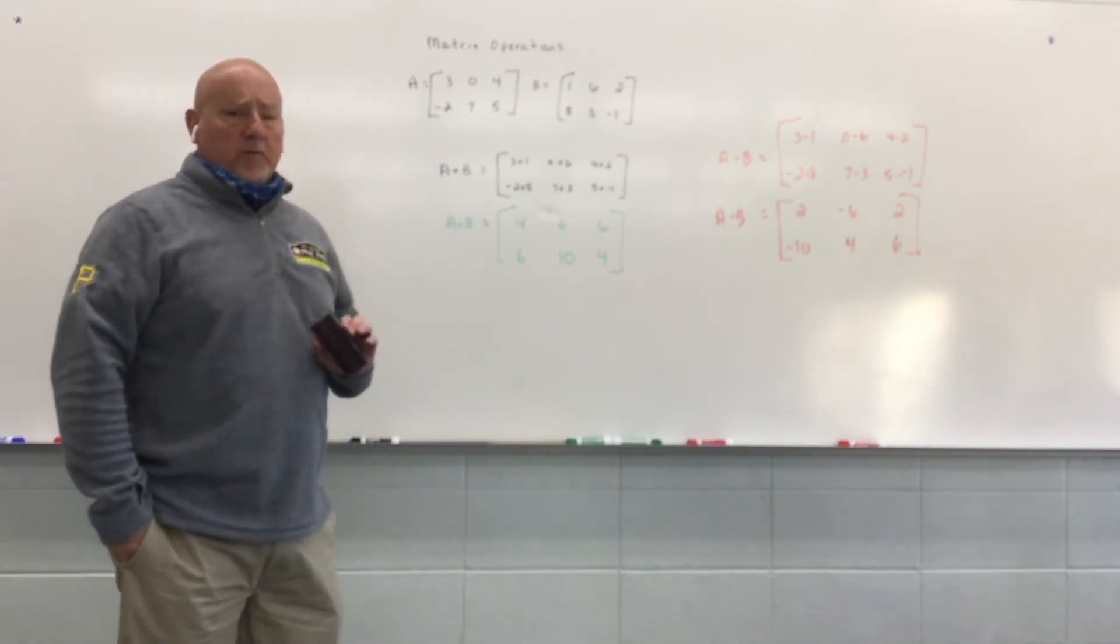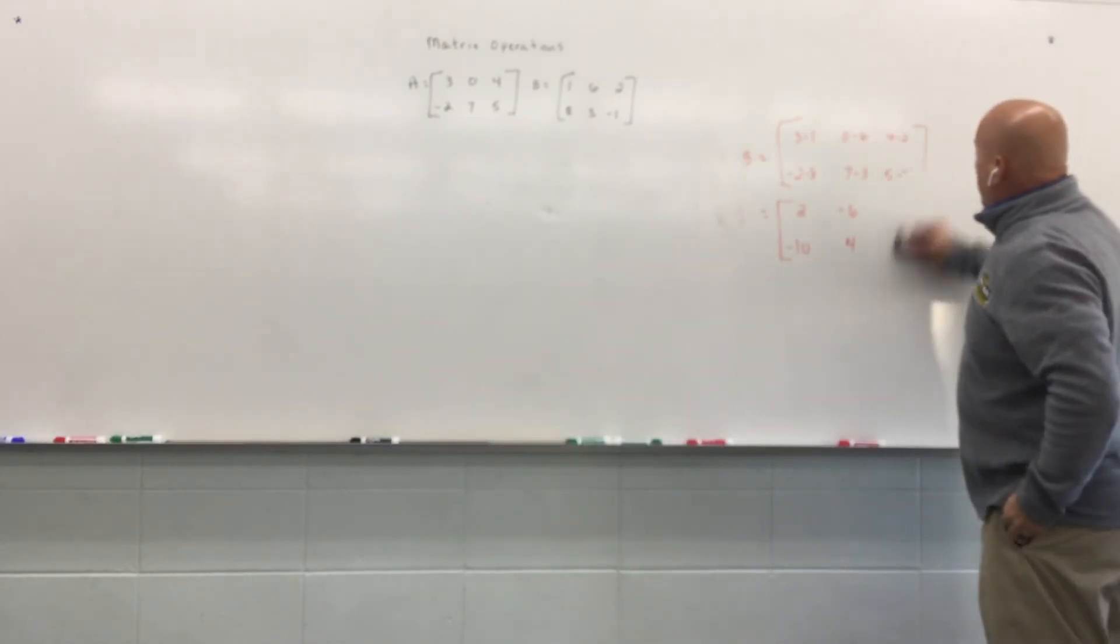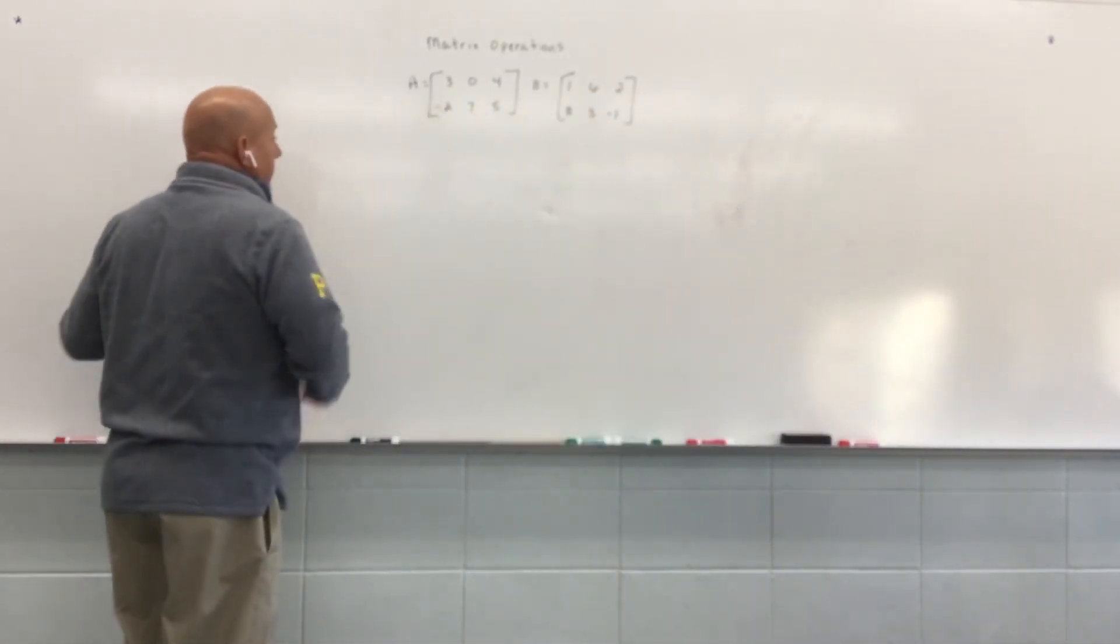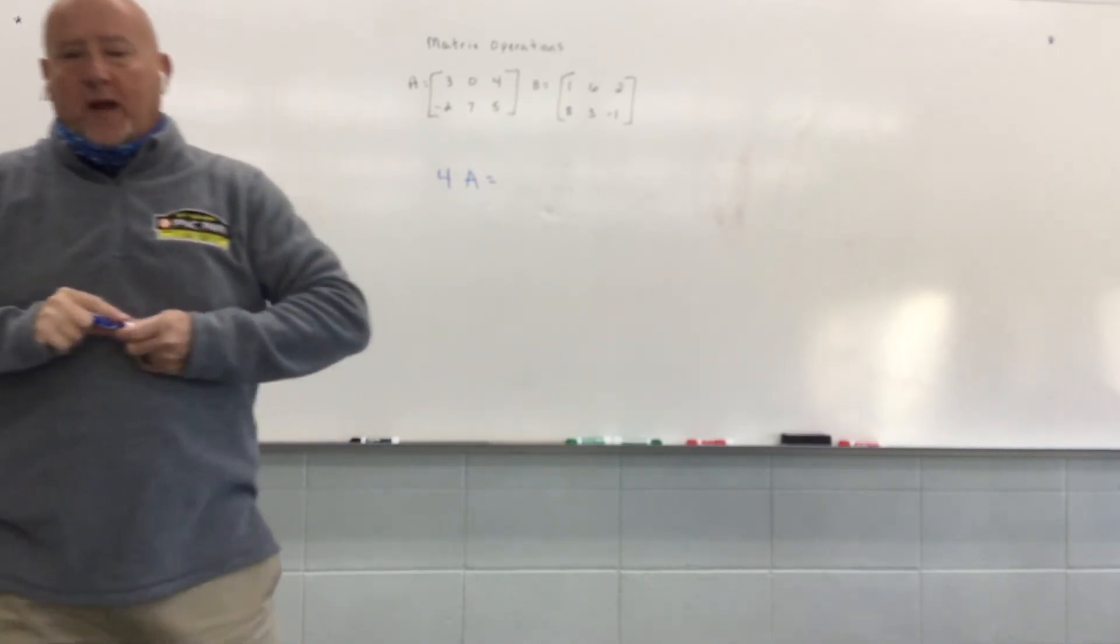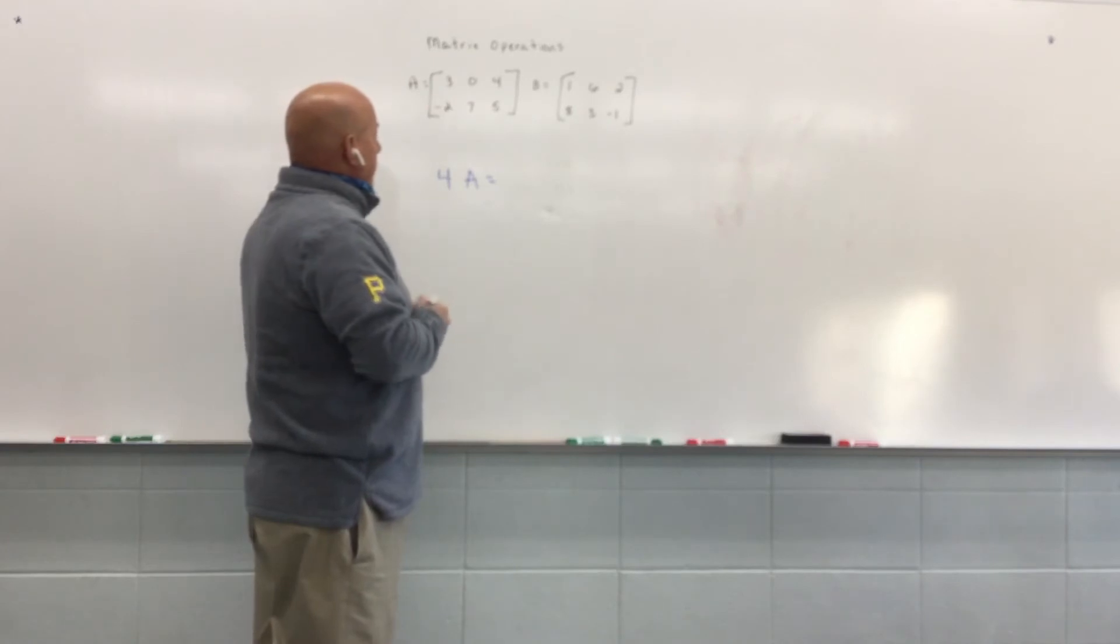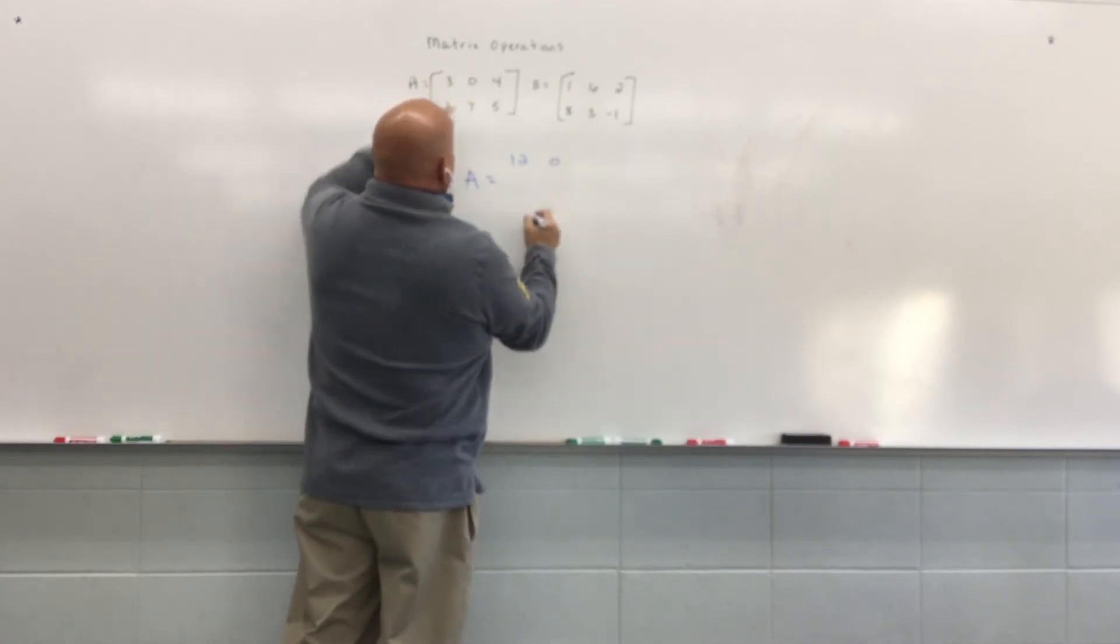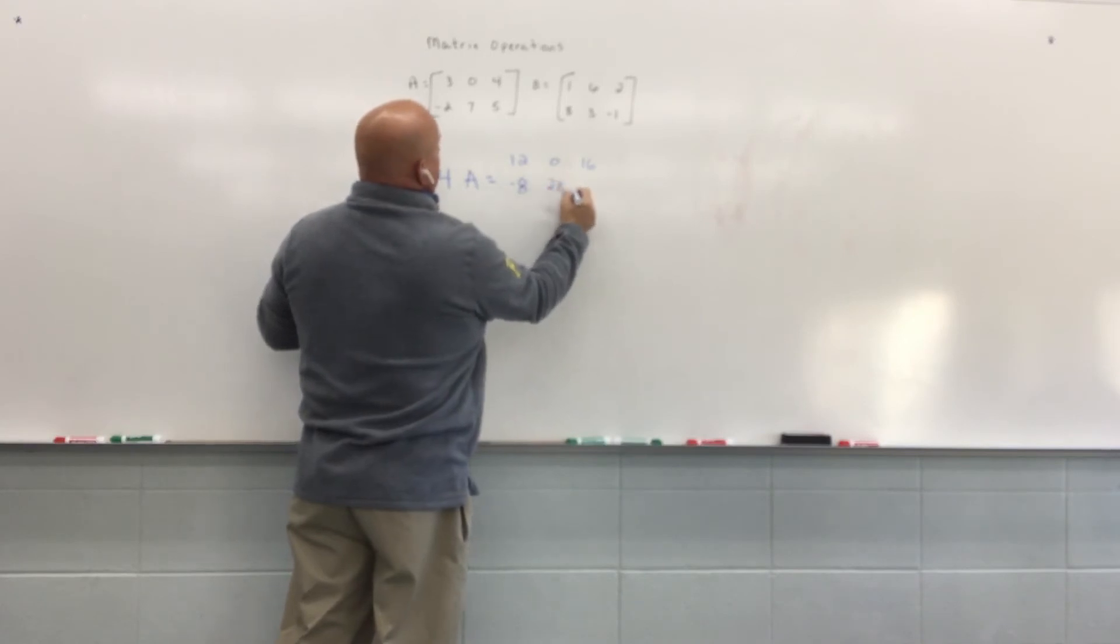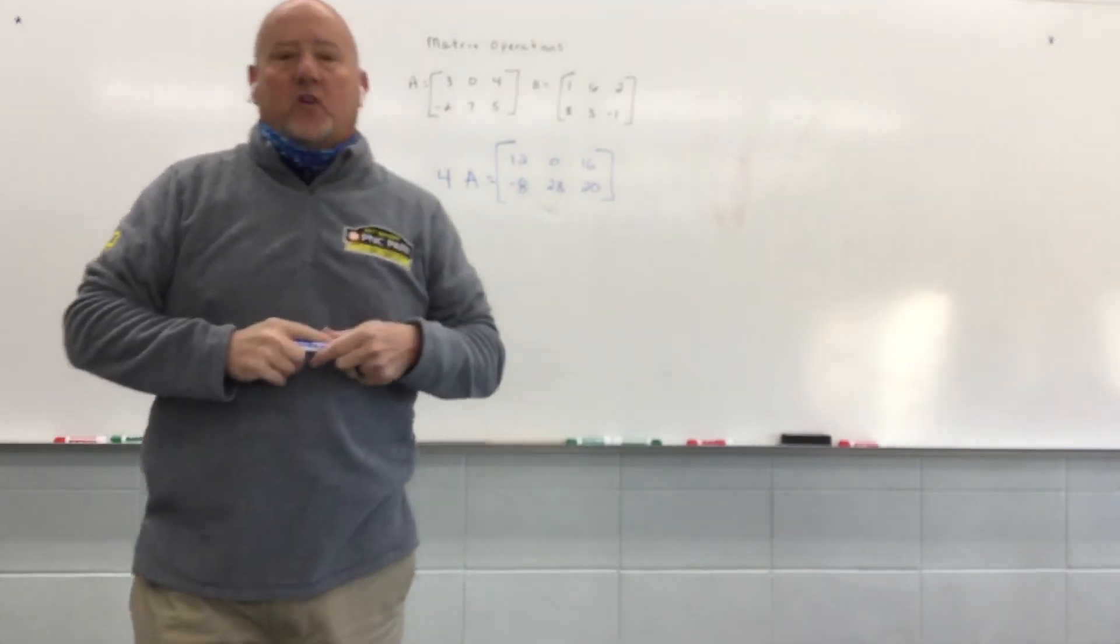So that's pretty simple. Let me talk about one more thing here today, and that's going to be called scalar multiplication. So scalar multiplication is when I take a number times the matrix. So I'm going to take 4 times A, and everywhere there's a value, I'm going to multiply that value times 4. So 4 times 3, 4 times 0, 4 times 4, 4 times negative 2, 4 times 7, and 4 times 5. So 4A would just be matrix A, 4 times as big.